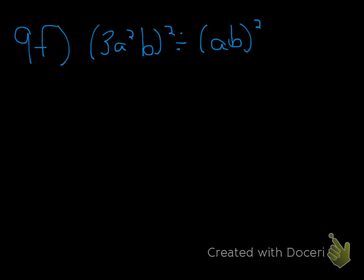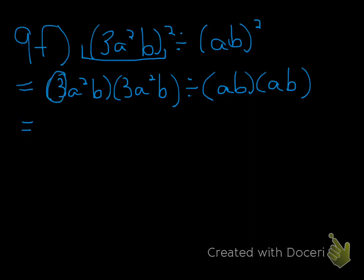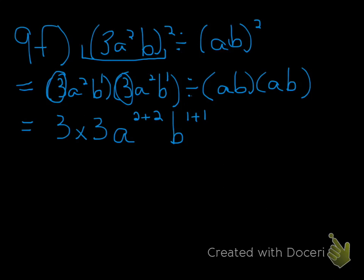I'm going to continue doing the next problem, but going a little bit faster. I'm going to have to expand my expression twice, so I'm just going to rewrite 3a²b two times. I rewrite the division symbol, and I rewrite ab twice. Now for the left side — don't forget your equal signs — we're going to multiply the numbers, so we write 3 times 3. Then we multiply the a's together: a to the power of 2 times a to the power of 2 — keep the same base and add the exponents. For the b's, we keep the same base and add the exponents, noting that both exponents are 1.